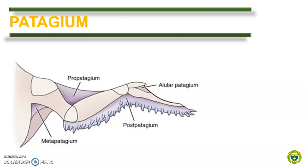The wing has four patagia. The propatagium is the largest skin fold of the wing and it fills the angle formed by the partially flexed elbow. The postpatagium is located at the caudal angle of the carpus. The metapatagium is located at the caudal junction of the thorax and the wing, while the alular patagium is located between the alula and the carpometacarpus.